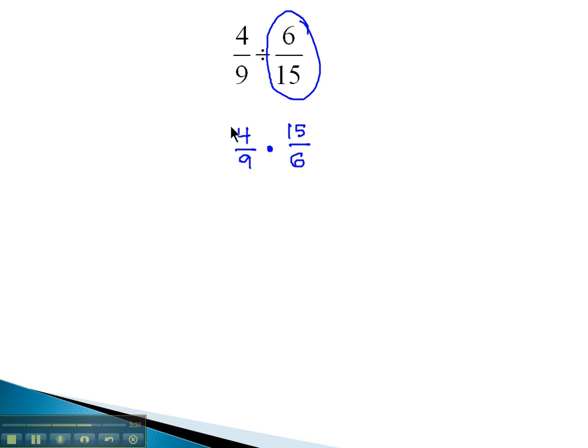4 and 6 are divisible by 2. 4 divided by 2 is 2, and 6 divided by 2 is 3. 9 and 15, they're both divisible by 3. 9 divided by 3 is 3, and 15 divided by 3 is 5.